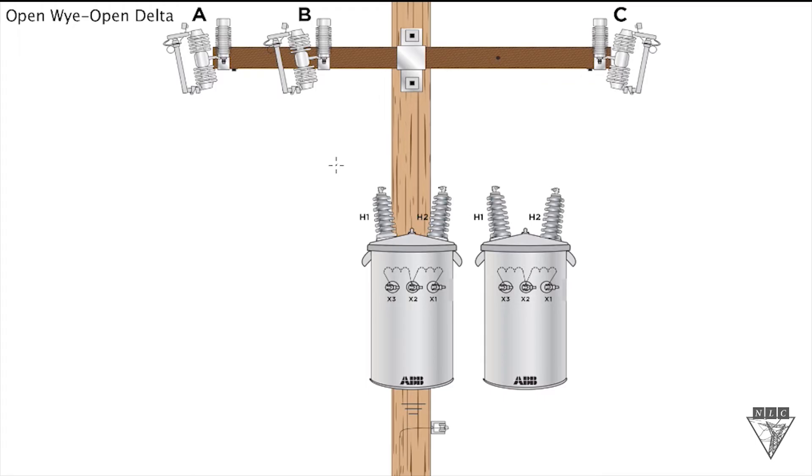All right, let's talk about an open Y open delta connection. Let's start on our primary side, and the first thing with this open Y primary connection is take your H2 bushings, tie them together, and then tie it to ground.